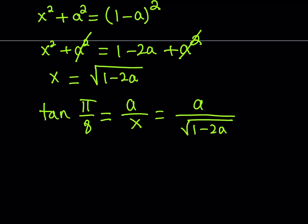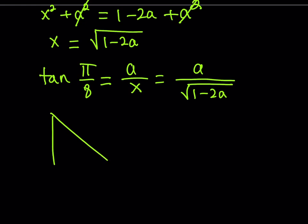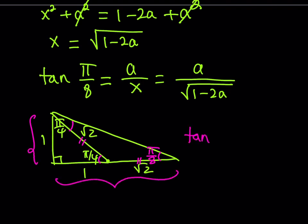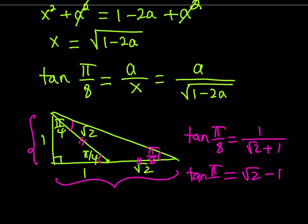Tangent of π/8 is square root of 2 minus 1. Here's how we find it — a really cool method. I'm going to draw an isosceles right triangle: this angle is π/4 and this is π/4, so the sides are 1, 1, root 2. Now I'll extend the base by root 2 units, which gives me an isosceles triangle. Since the base angles of that isosceles triangle are congruent, and their sum from the exterior angle theorem is π/4, each base angle is π/8. Therefore tangent of π/8 equals 1 over (root 2 plus 1). If you rationalize the denominator you get root 2 minus 1. Or you can use the double angle formula — either way, tangent of π/8 equals root 2 minus 1.